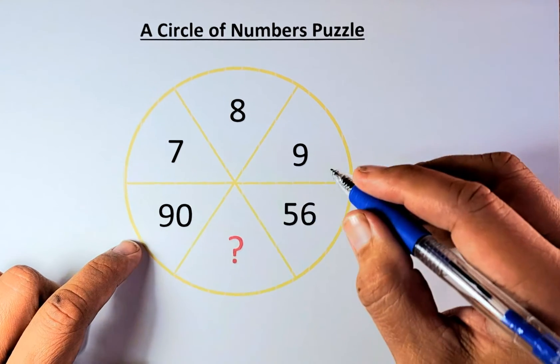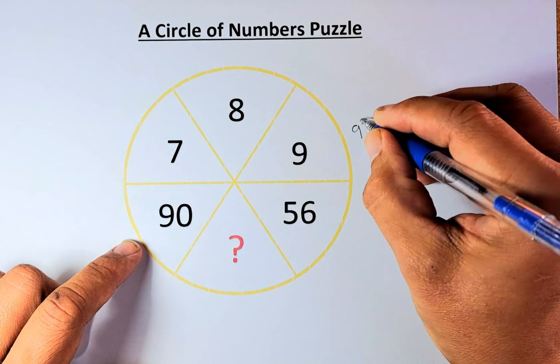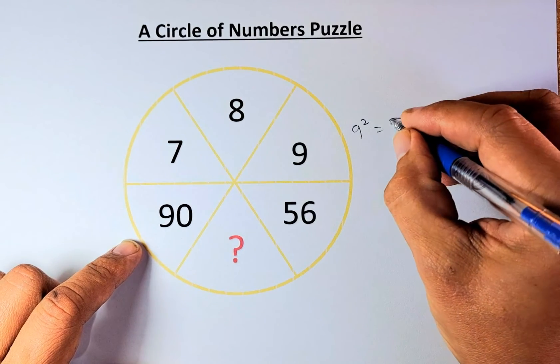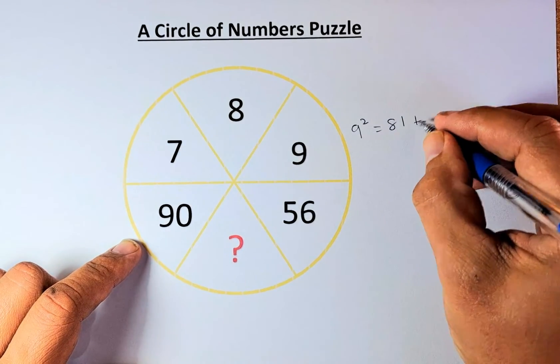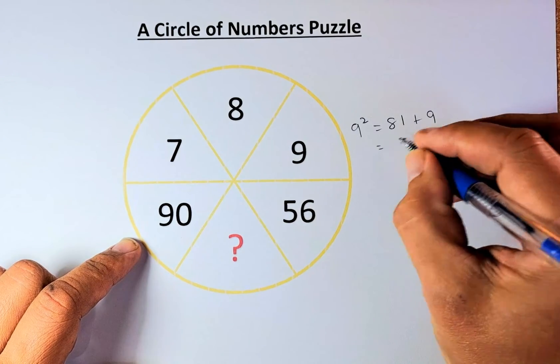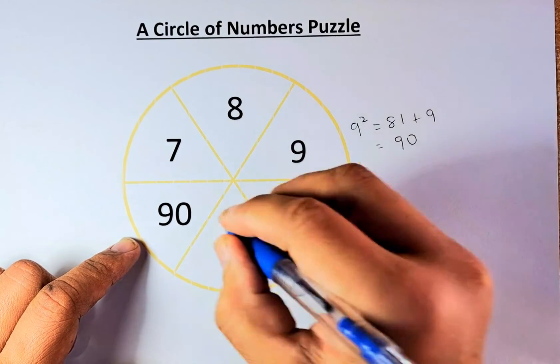So to get 90, it's very simple. What you do, you take 9 squared which is 81, and then you're going to plus 9. So 81 plus 9 will give us 90.